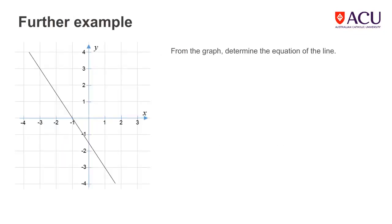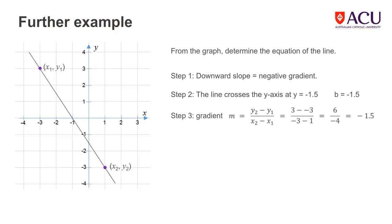Here we have a graph of a straight line and we are being asked to work out its equation. It has a downward slope from left to right, so we know it will have a negative gradient. We observe that the line cuts the y-axis at negative 1.5, so the value of b in the equation will be negative 1.5. By selecting two points on the line and applying the formula, the gradient works out to be negative 1.5 also. So, the equation of the line becomes y equals negative 1.5x minus 1.5.